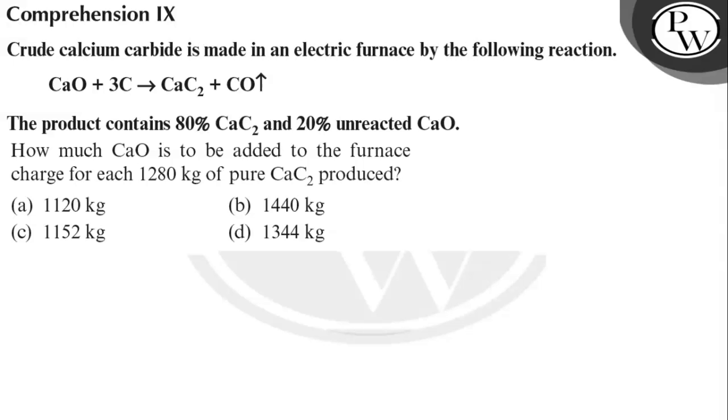Hello, let's see this question. The question says crude calcium carbide is made in an electric furnace by the following reaction: CaO plus carbon yields CaC2 plus carbon monoxide. The product contains 80 percent CaC2 and 20 percent unreacted CaO. How much CaO is to be added to the furnace charge for each 1280 kg of pure CaC2 produced? So let's see the calculation.